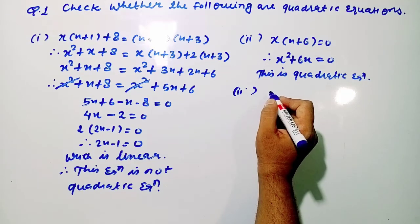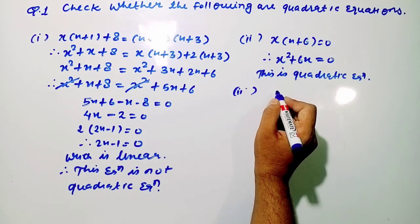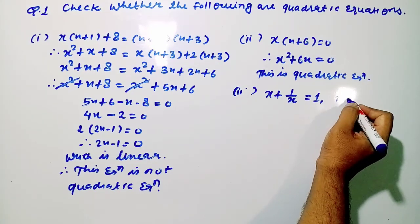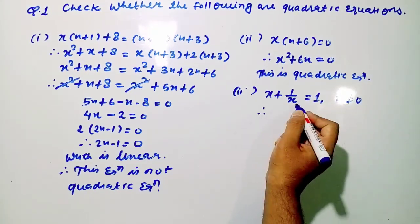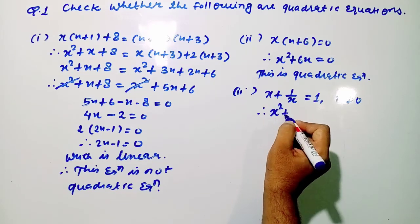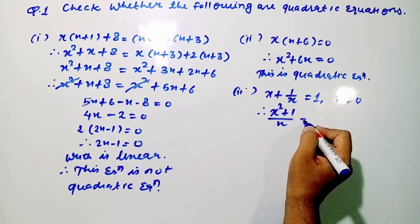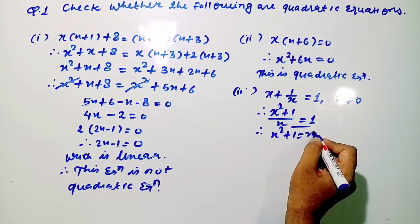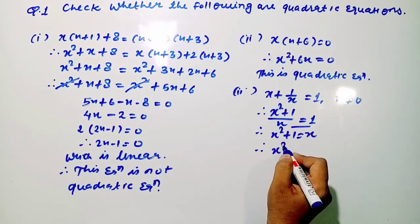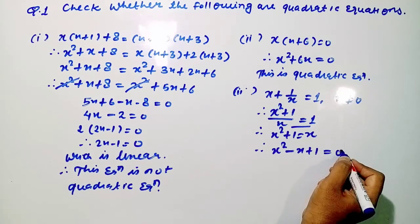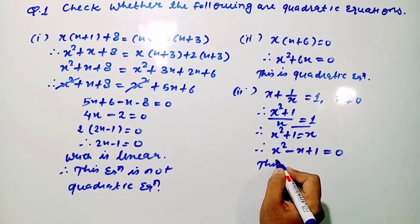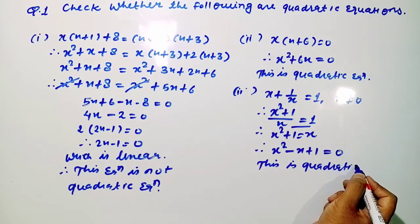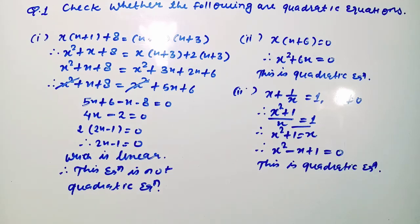Let us see the next question: x + 1/x = 1, where x ≠ 0. Simplifying, we get (x² + 1) / x = 1, so x² + 1 = x, which gives x² − x + 1 = 0. This equation can be compared with ax² + bx + c, because the degree is 2. So this is a quadratic equation.